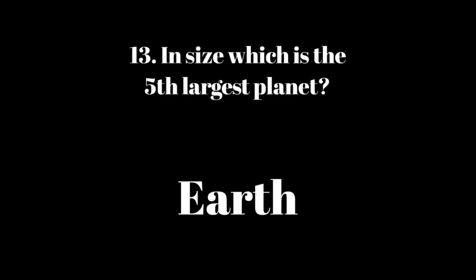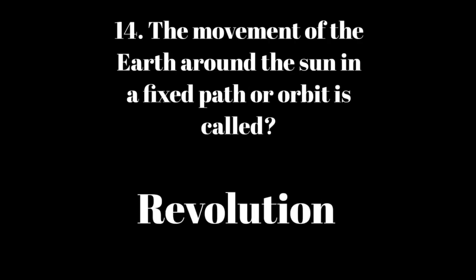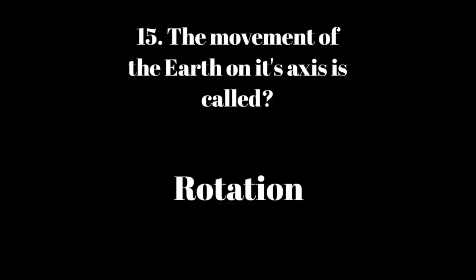Question 13: In size, which is the fifth largest planet? Question 14: The movement of the Earth around the Sun in a fixed path or orbit is called? Answer: Revolution. Question 15: The movement of the Earth on its axis is called? Answer: Rotation.